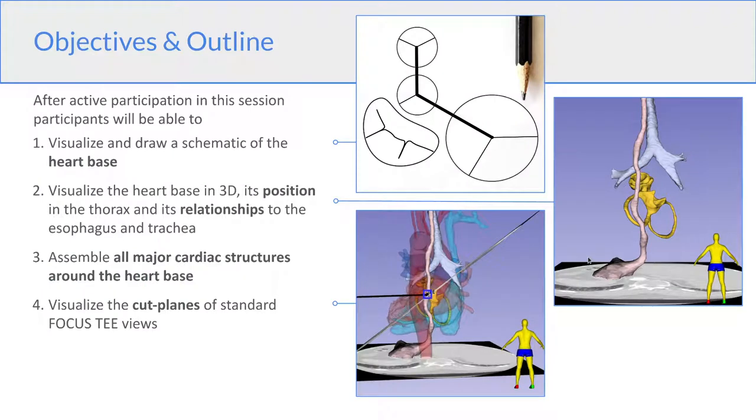So in presenting anatomy for echocardiography today, I'm going to take a bit of a different approach than what you may have seen before. I'm going to focus on the heart base, which corresponds roughly to the fibrous skeleton of the heart, and it's basically the supporting structure for all of the valves in the heart and anchors all the major structures and chambers in the chest. We can then anchor all the rest of the cardiac structures to the heart base and visualize the position of everything in 3D quite easily.